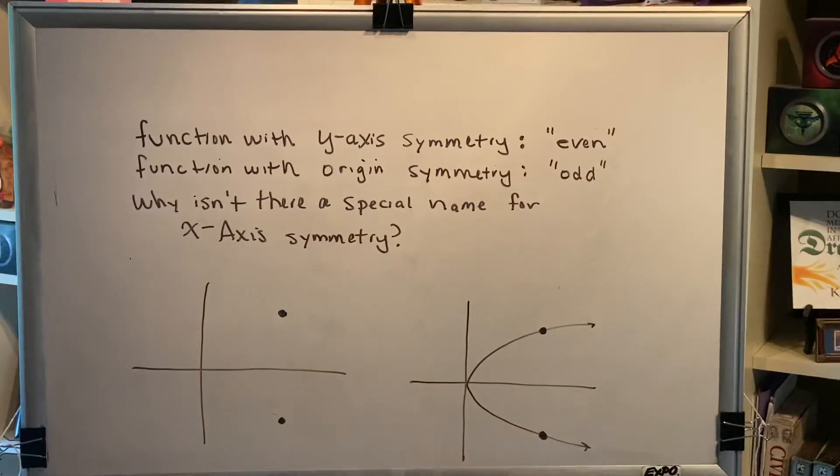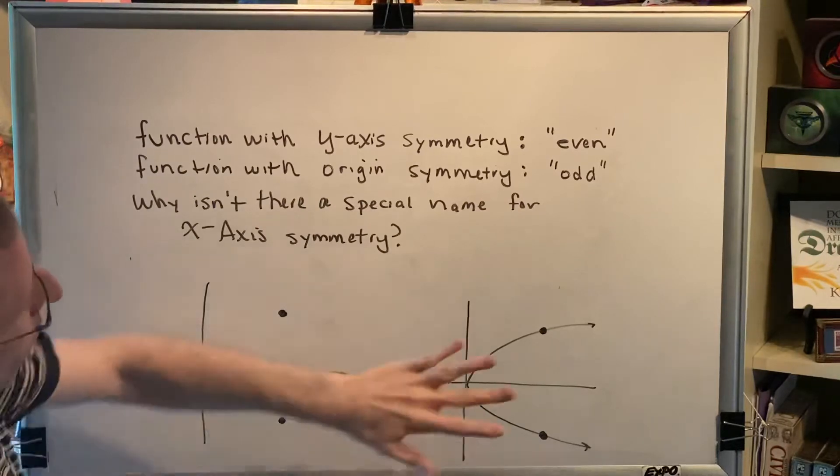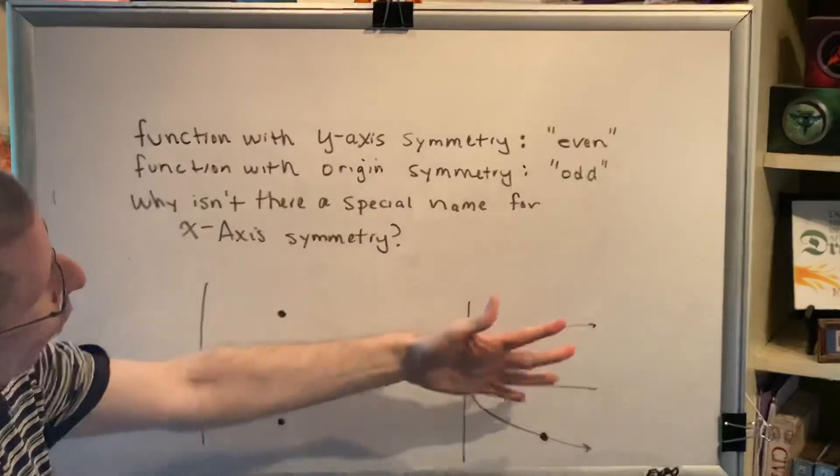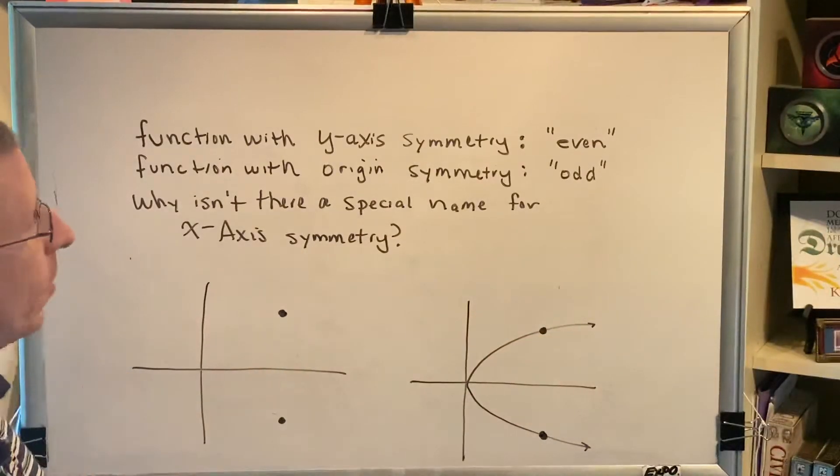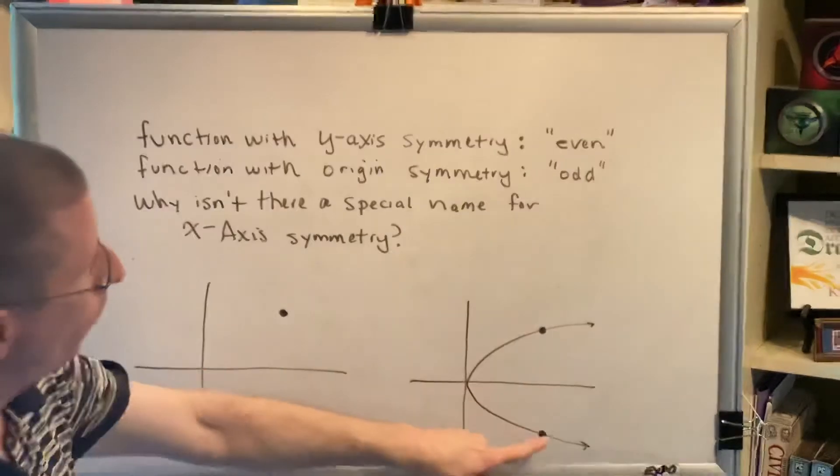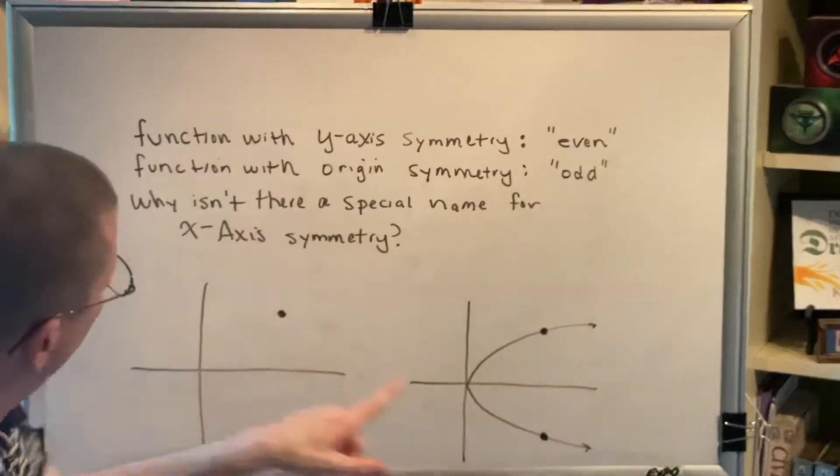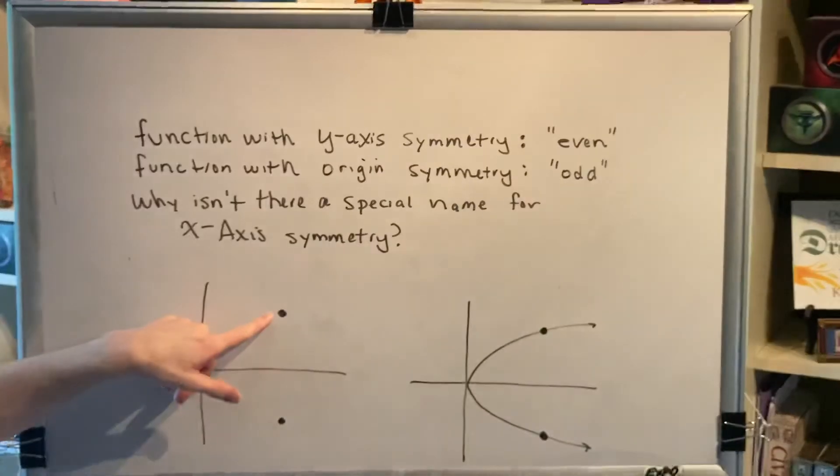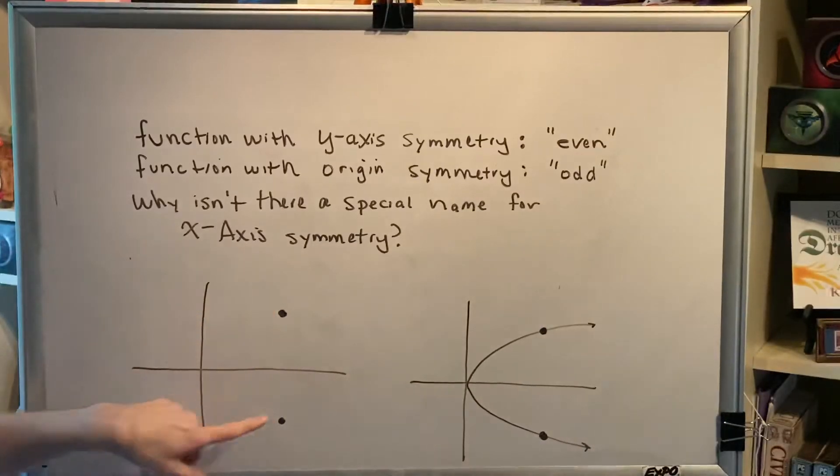Remember, x-axis symmetry is illustrated by rotating the graph around the x-axis and having the picture be the same before and after. If that's true, that means for every point above, there must be a point below, such as this particular relation. For a point above, there is a point below.